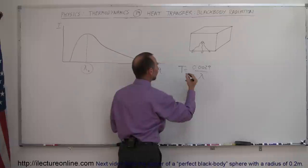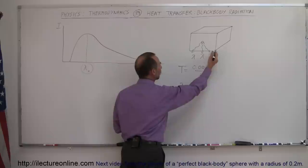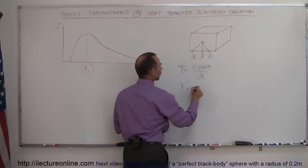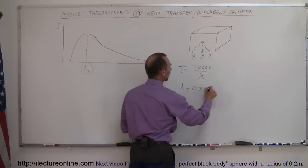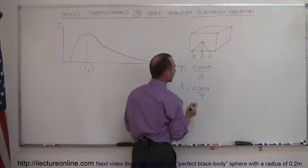Conversely, we can say that the wavelength coming out of the box will be equal to 0.0029 divided by the temperature in Kelvin.